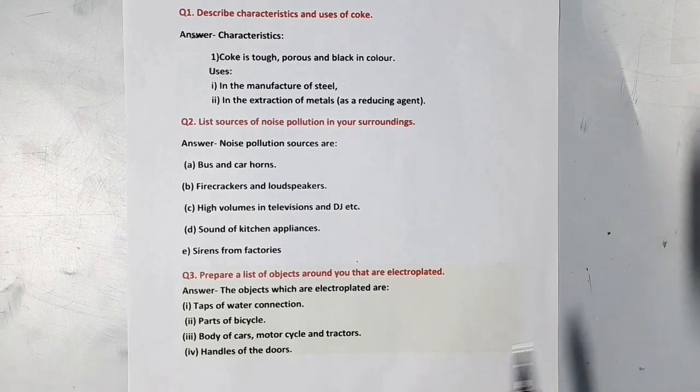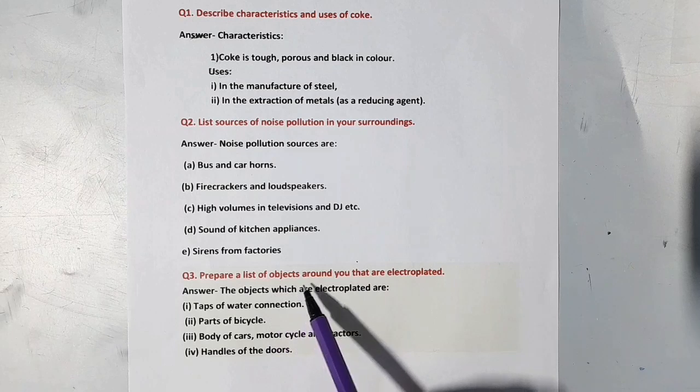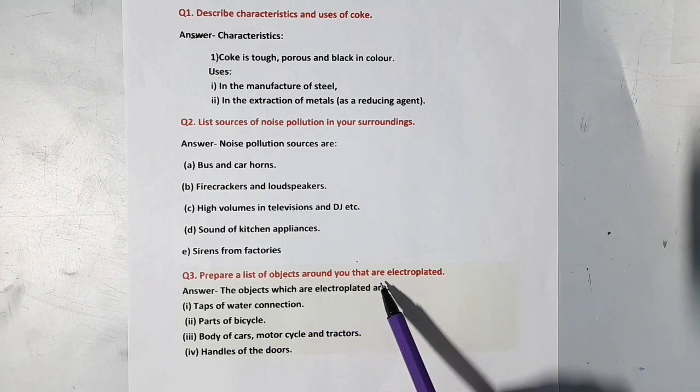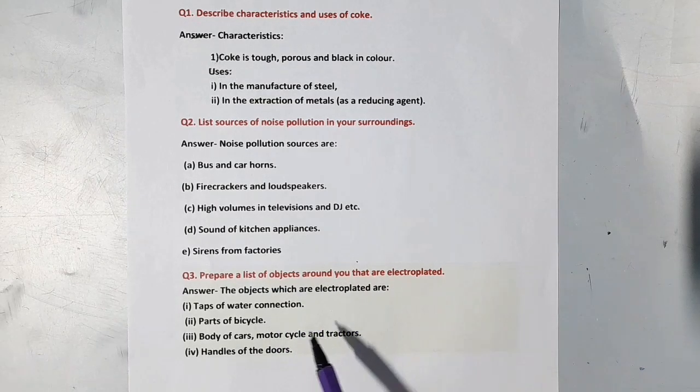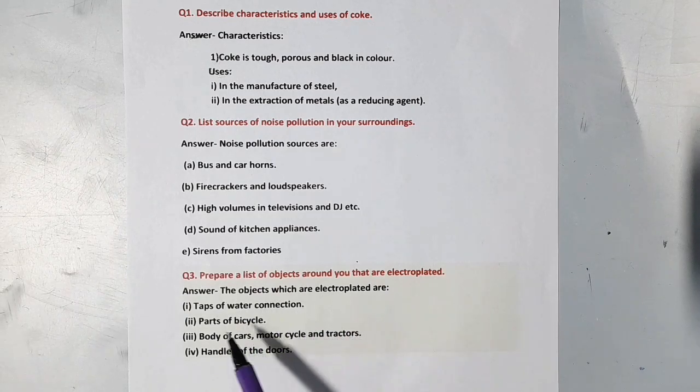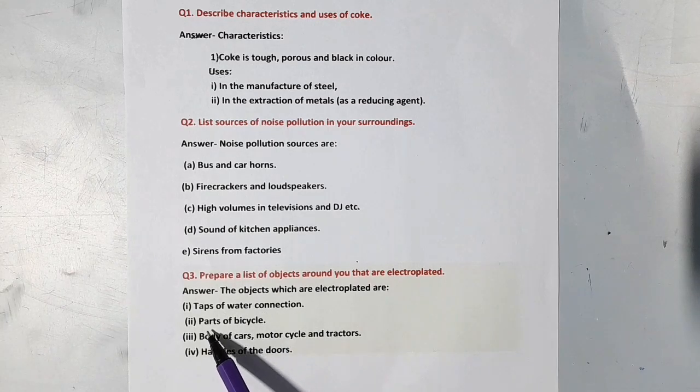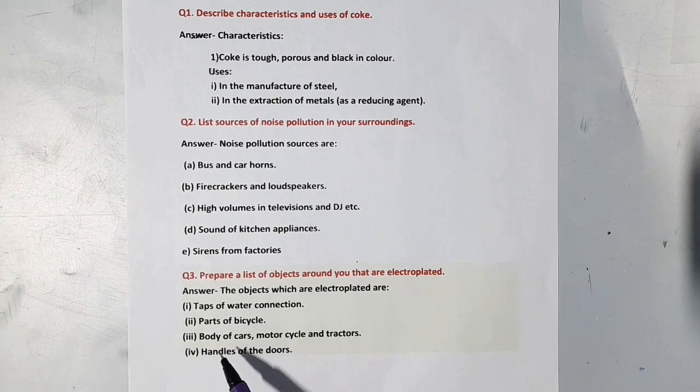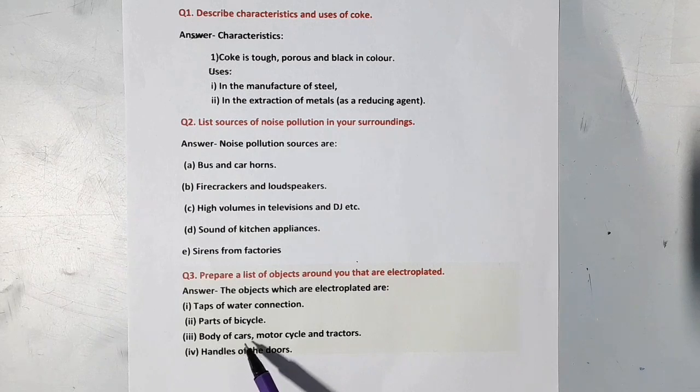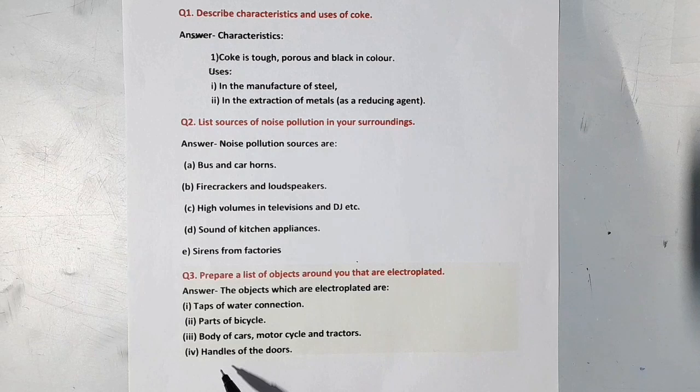Our next question is prepare a list of objects around you that are electroplated. The objects which are electroplated are: Taps of water connection, parts of bicycle, body of cars, motorcycle and tractors, handles of the doors.